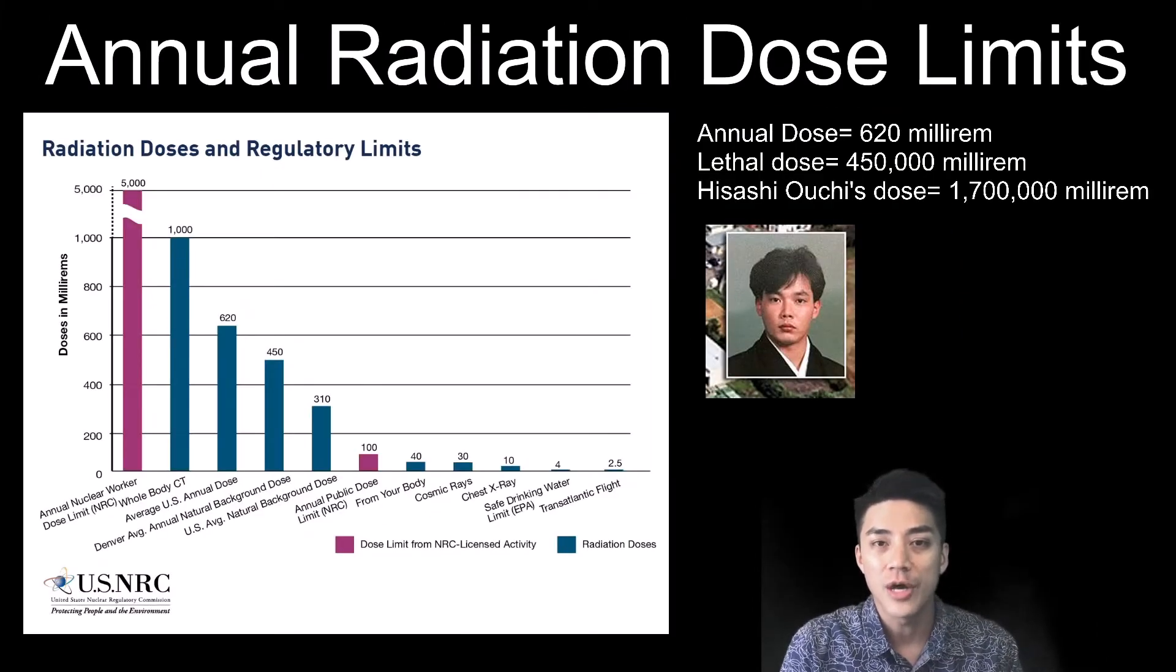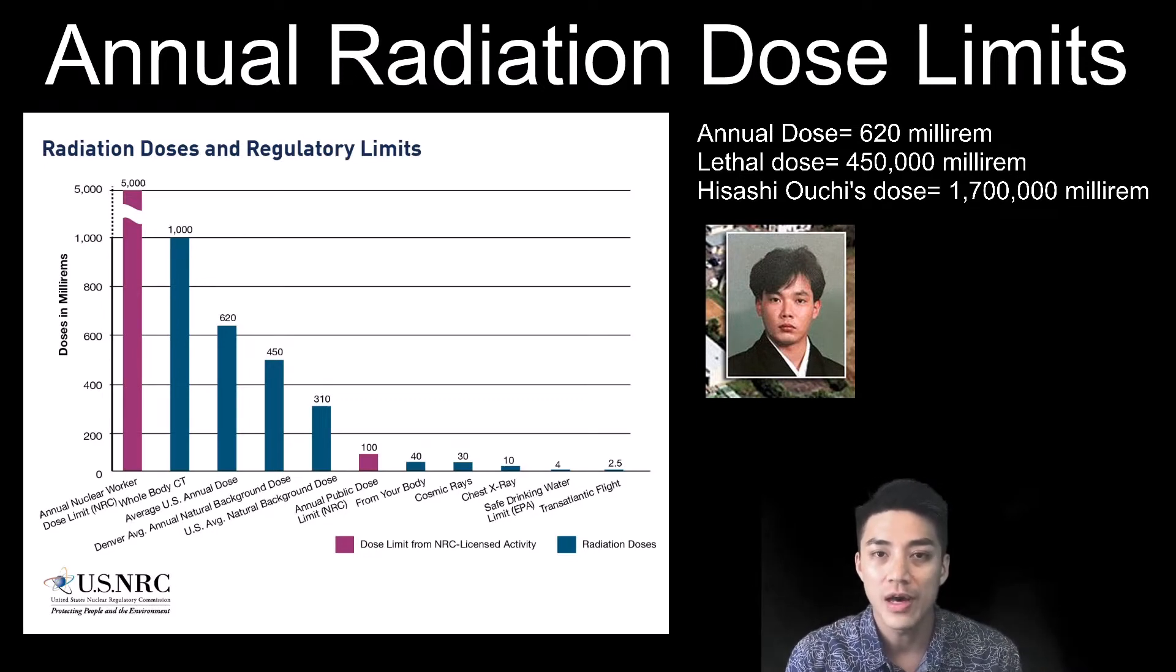But it's really nothing to worry about at all. The average person receives 620 millirems of radiation per year just from natural background radiation. The average nuclear power plant worker receives 5,000 millirems. If you receive 450,000 millirems all at once, that's a lethal dose. It should kill you.